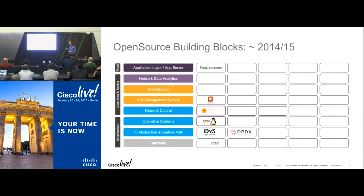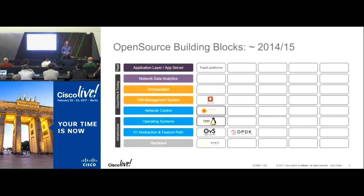Looking at the open source building blocks from two or three years ago, we were still limited. We had OpenStack as a virtual machine manager, OpenDaylight as a network controller, a base operating system, and predominantly one option for a virtual forwarder: Open vSwitch. Open vSwitch was developed for cloud applications — not with performance in mind, just plain functionality. It shifts 60,000 packets on a single core. For networking, that's not enough. Things had to be improved.